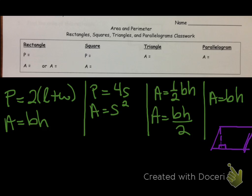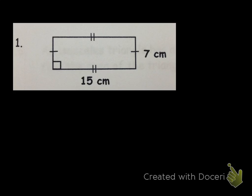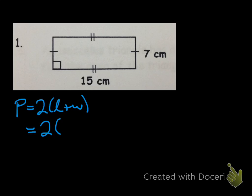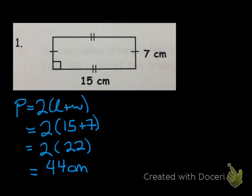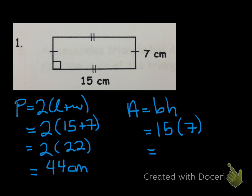Let's do some practice problems. This first one is pretty simple — it's a rectangle, and you know it's a rectangle because of the congruency marks and because of the right angles. So first, find the perimeter. Remember perimeter is 2 times the length plus the width, so that's 2 times 15 plus 7, which is 2 multiplied by 22. So the perimeter is equal to 44 centimeters. We have to make sure we're putting the units on there. Area is base times height, so we have the base of 15 multiplied by 7, so our area is 105 centimeters squared.